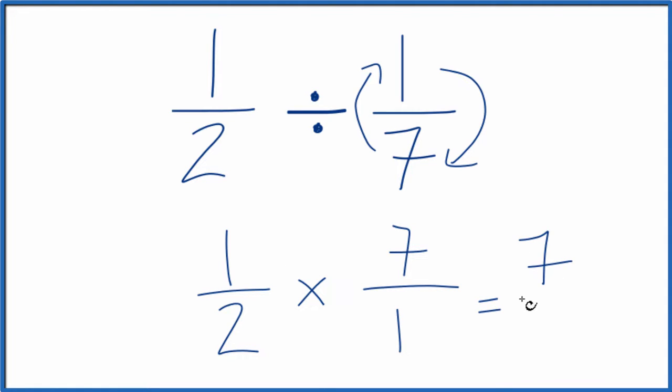1 times 7, that's 7. 2 times 1, that's 2. So 1 half divided by 1 seventh, that gives you 7 halves.